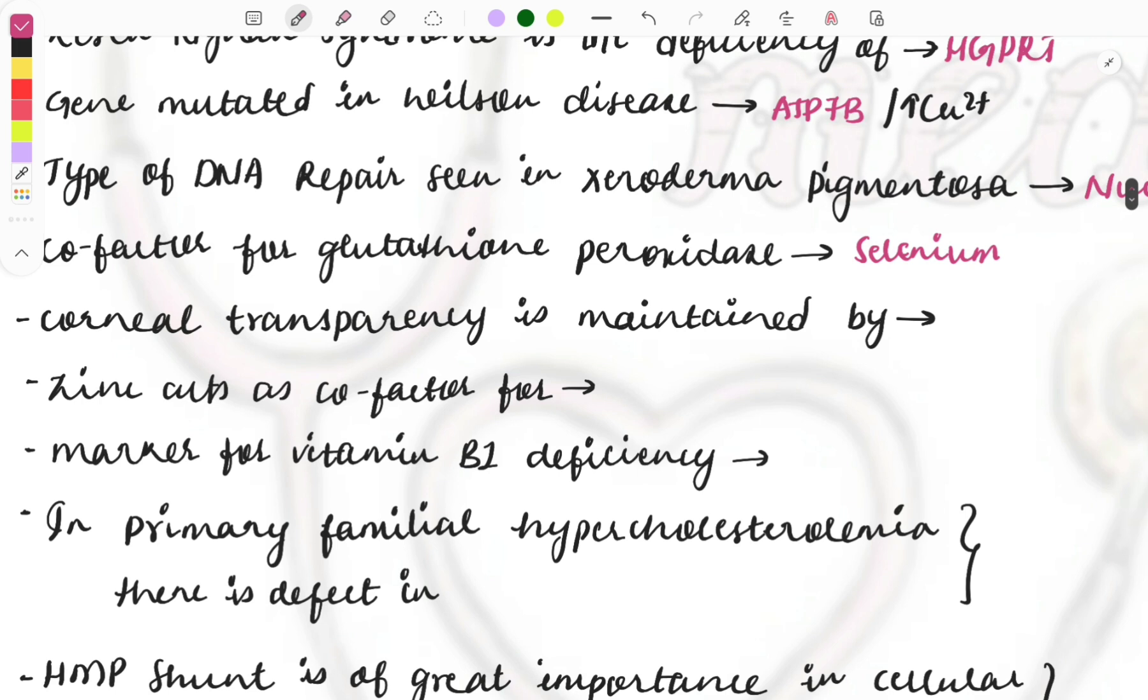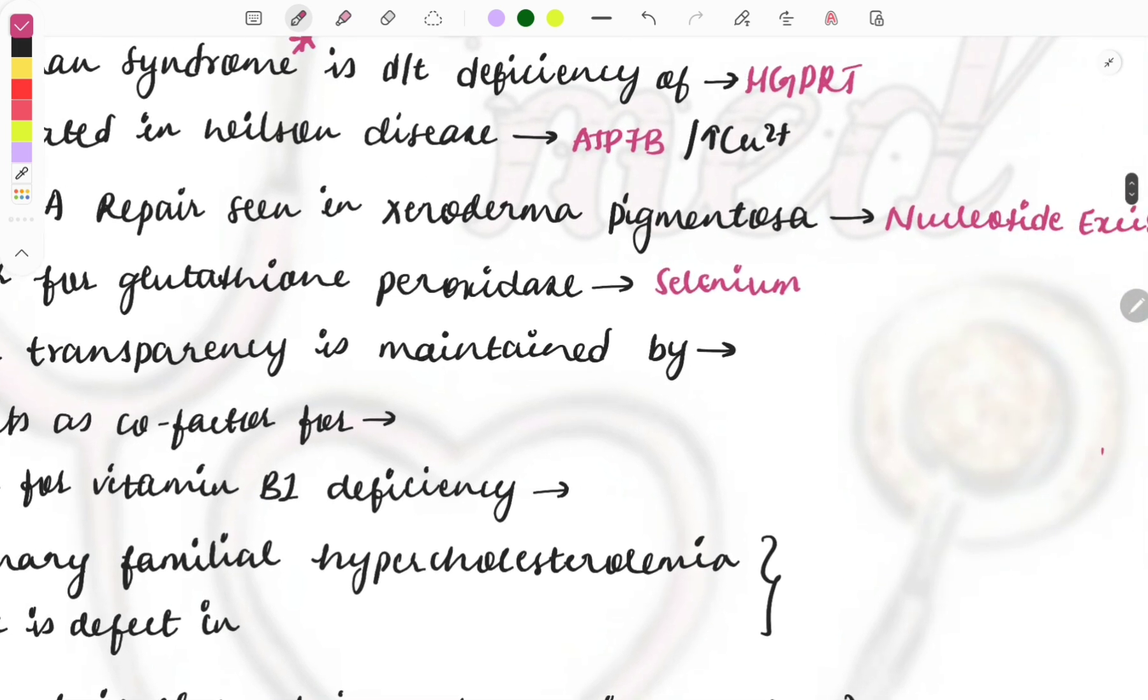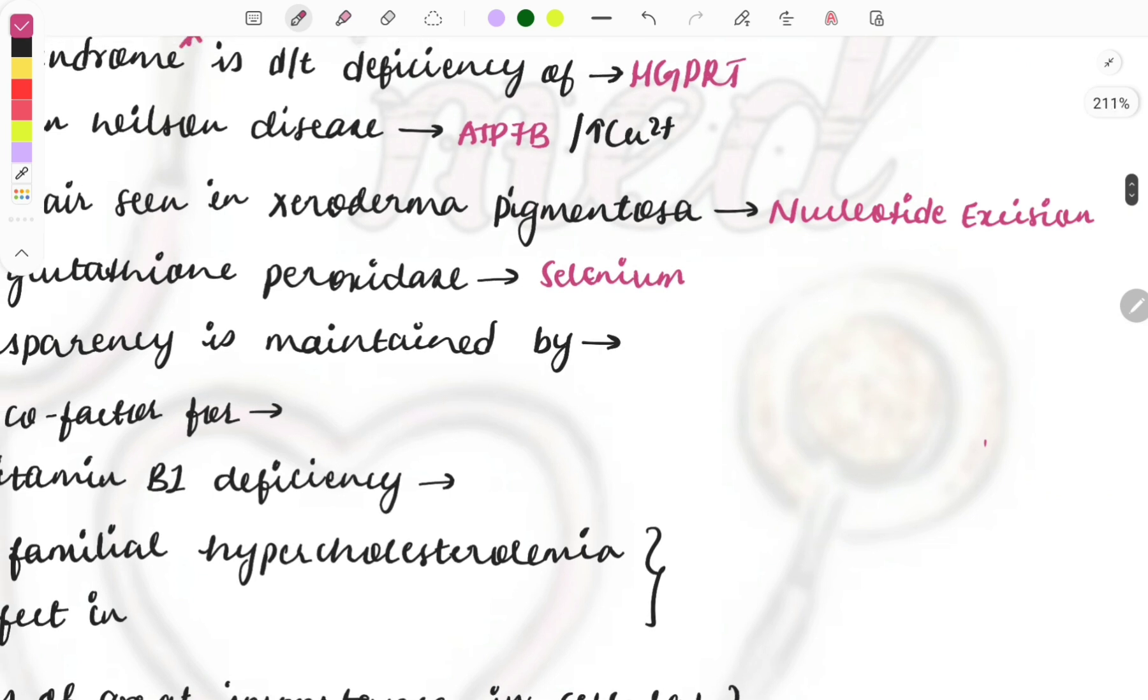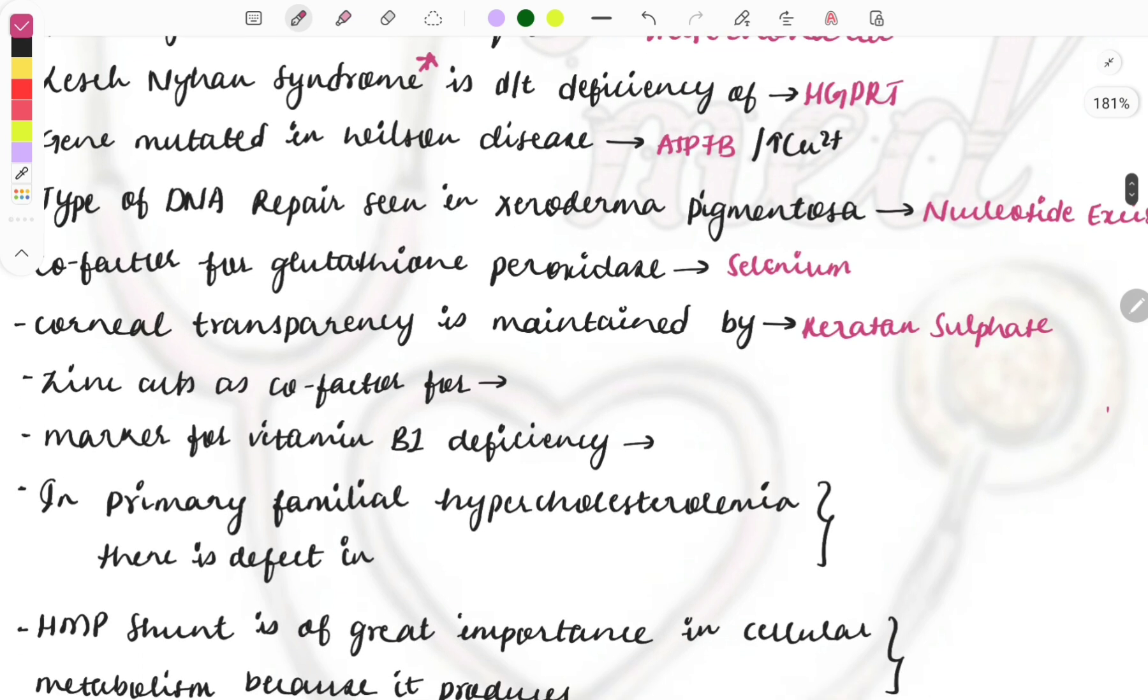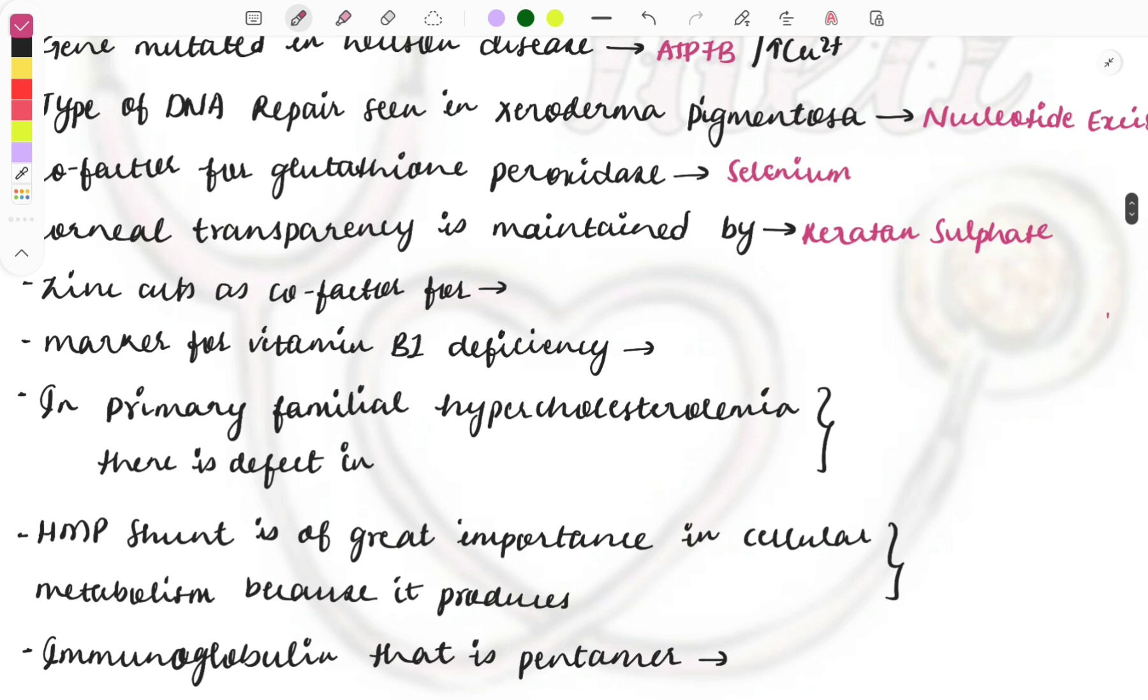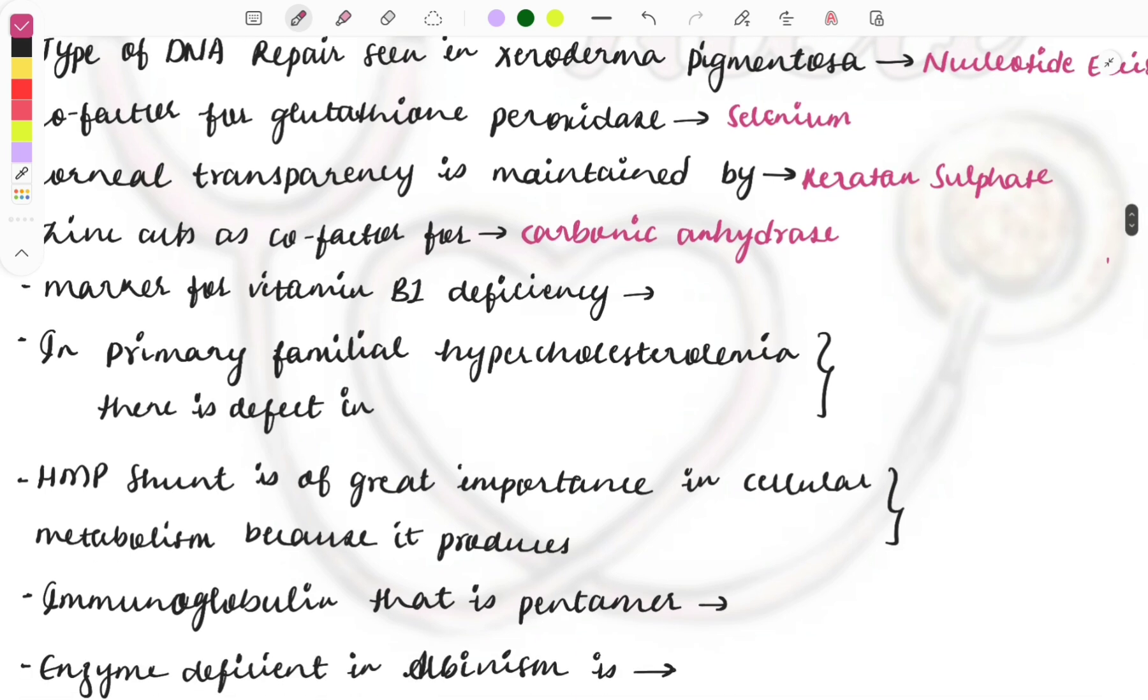Corneal transparency is maintained by which glycosaminoglycan? It is keratan sulfate. Zinc acts as a cofactor for which enzyme? It is carbonic anhydrase enzyme. All these important things I have discussed in the revision videos. If you watch just those revision videos, it will be more than enough for biochemistry. All the important things you must know will be covered from that. Watch those videos at least twice and revise the notes.